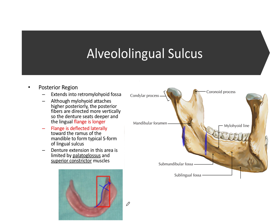To review, the flange follows two S's. The first is the aerial-view S — in, out, in. The second is the side-view S: the flange starts short based on where the sublingual gland is, then gets longer in the posterior region where the mylohyoid muscle fibers run more vertically. If you remember those two S's and why the flange is designed that way to accommodate the muscles and bone structure of the mandible, you'll know all you need for the board exam on the alveololingual sulcus.